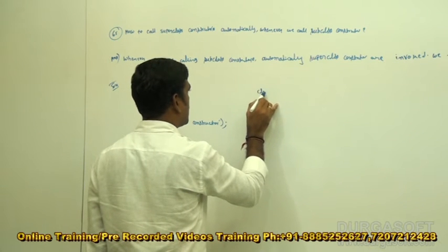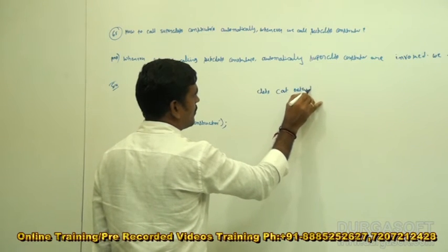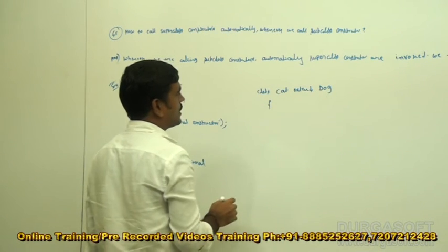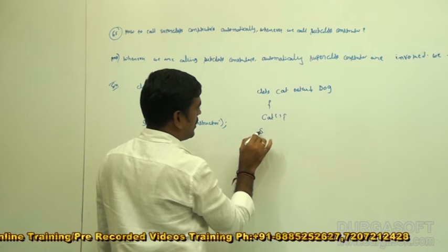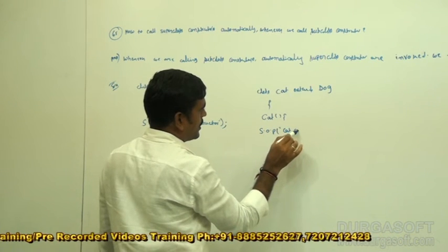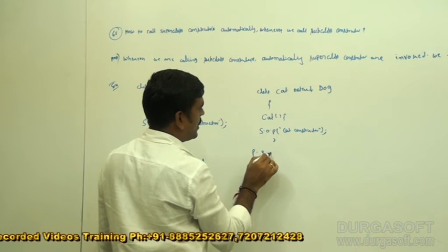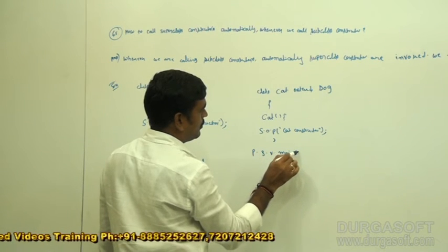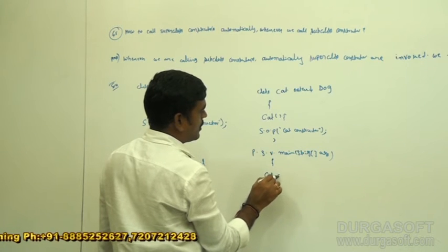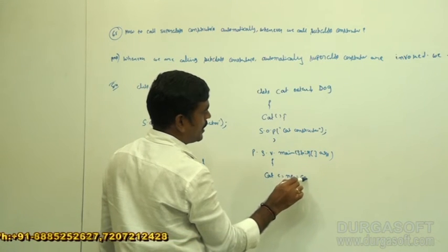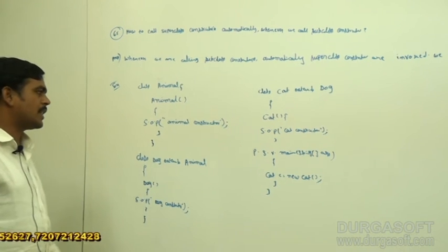Now for testing purpose, I am taking one more class: Cat extends Dog. Under that, system.out.println, cat constructor. Then public static void main, string args. Cat c is equal to new Cat. Then automatically these constructors are going to be called. We are not calling them explicitly.